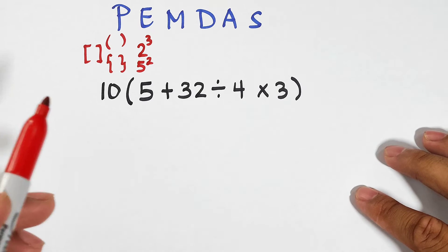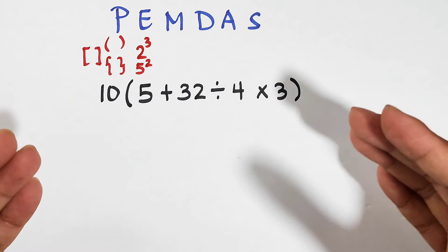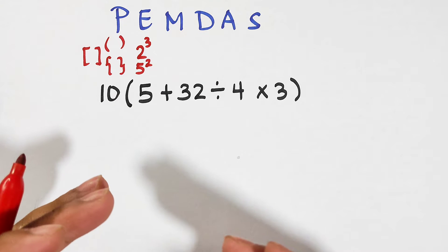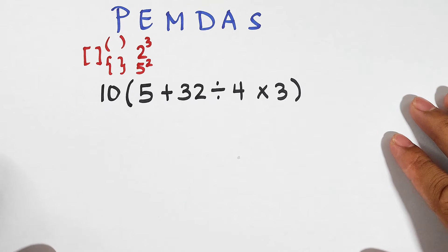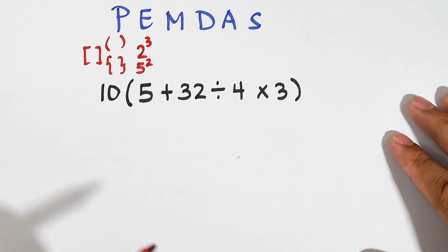But there is a special rule: if the division comes first from left to right, you will perform division. And if the multiplication comes first from left to right, you will go first with the multiplication. So the rule here is whichever comes first from left to right, we will perform it, either multiplication or division.